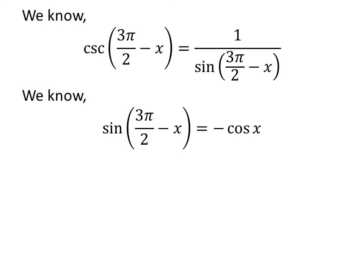As we know, the trigonometry identity sine of 3 times pi upon 2 minus x is equal to minus cosine of x. The video appearing in the upper right corner explains the verification of the said identity. The link of the video is also mentioned in the description section.